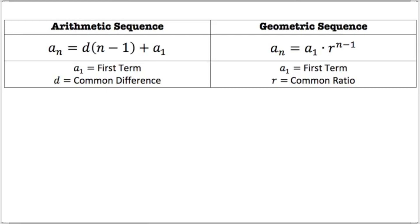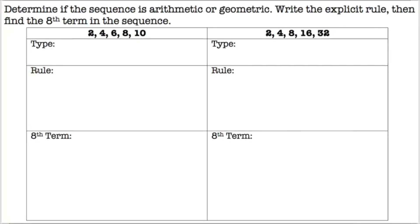For geometric sequences, a-sub-n is the answer you're looking for, a-sub-1 is your first term, r is the common ratio — remember that needs to be written as a decimal — and it's raised to the power of n minus 1. You do the exponent first, then multiply by a-sub-1. For the common ratio, we divide the second number by the first number when we're given a table or a set of numbers.